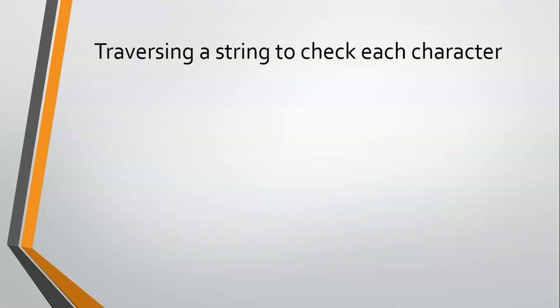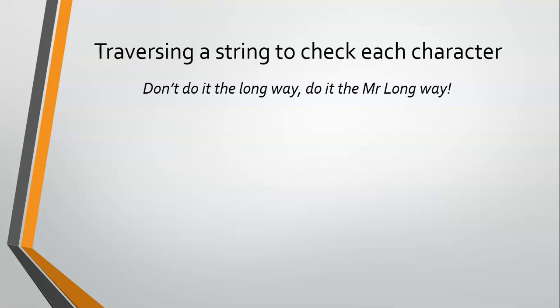The second technique is when we know we're going to be checking each and every individual letter in a string. If we've got a string and we want to check it, we're basically going to use a for loop that goes from the first character till the end of the string. How do we know the end of the string? It's the length of the string. So we're going to go from character one till however many characters are in the string — in this example it's 48, so we would go from one to 48, or the length of the string.